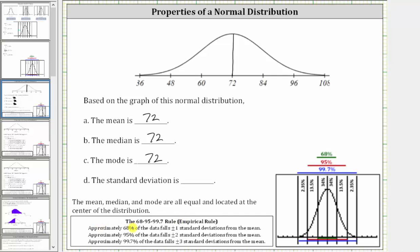The empirical rule states approximately 68% of the data falls plus or minus one standard deviation from the mean, which for our graph is from 60 to 84. This is actually enough information to determine the standard deviation, but let's finish reviewing the empirical rule.